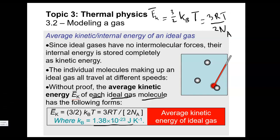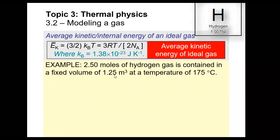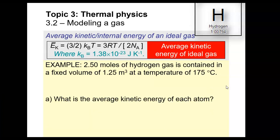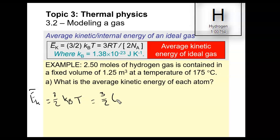Let's do some examples. 2.5 moles of hydrogen gas is contained in a fixed volume of 1.25 cubic meters at a temperature of 175°C. By the way, the type of gas doesn't really matter — that's one of the cool things about an ideal gas. First, what is the average kinetic energy of each atom? There are a ton of gas particles — some have very high energy, some have very low energy. This asks only for the average kinetic energy of each atom, which is (3/2) × kB × T.